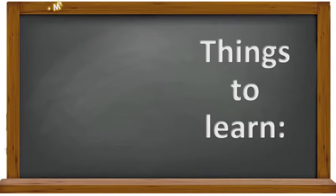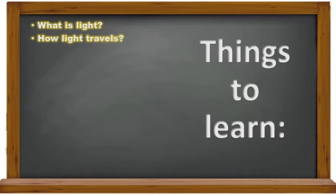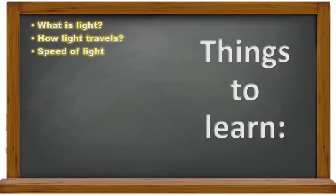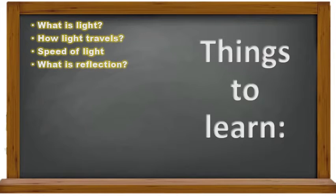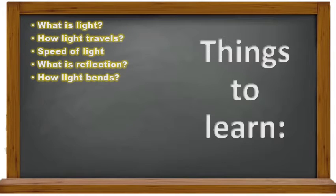Here are the things to learn from this chapter. In the chapter Light, first we discussed about what is light and how light travels. We came to know that light travels in a straight direction or straight line, which can be shown by an arrow. Then we learnt about the speed of light.